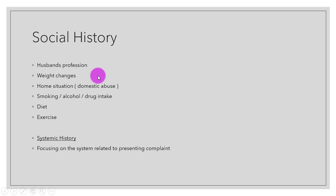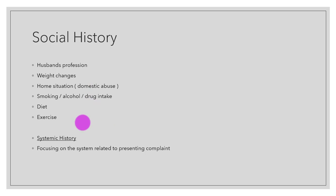We start the social history by asking the husband's profession, any weight changes during, after, or before the pregnancy, and the patient's home situation — focusing on domestic abuse, which is a sensitive topic. We ask about smoking — which causes reduction in birth weight in a dose-dependent way and increases the risk of miscarriage, stillbirth, and neonatal death — as well as alcohol or drug intake, diet, and exercise. Then we start the systemic history, focusing on the system relating to the presenting complaint.